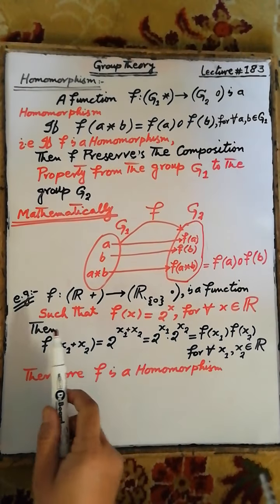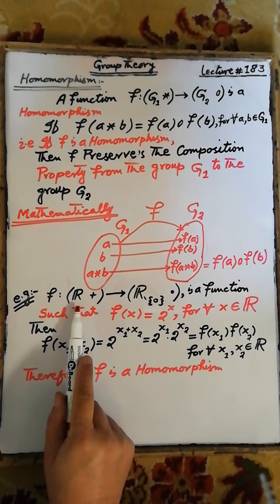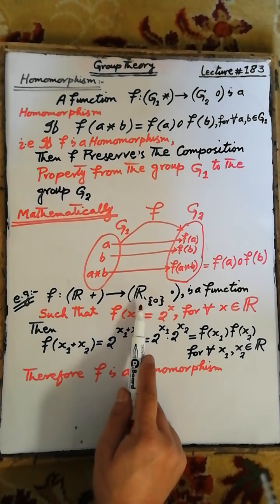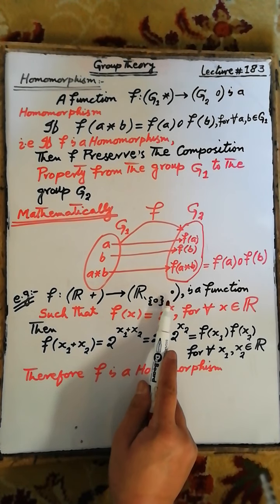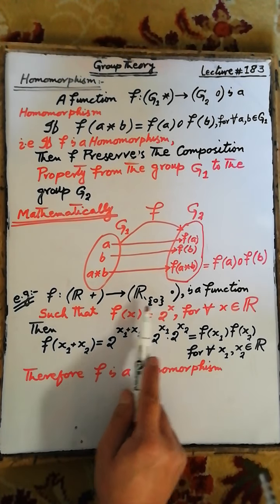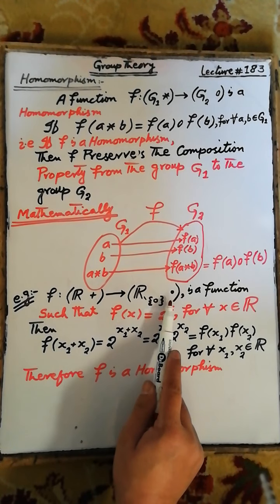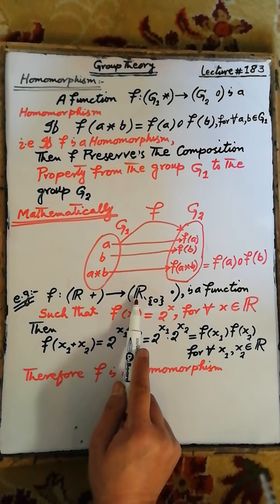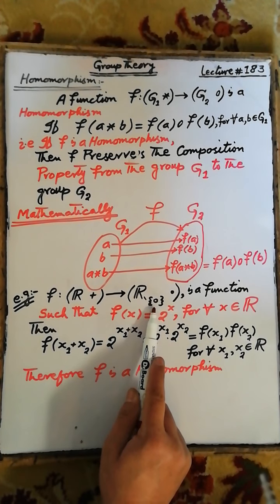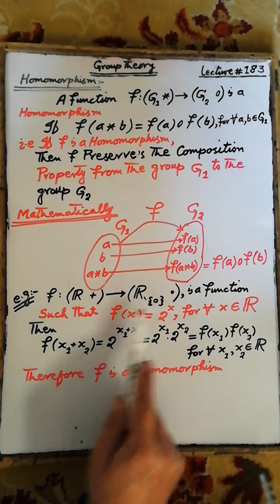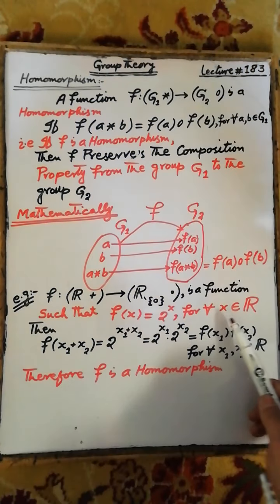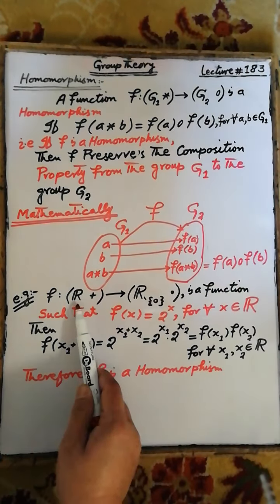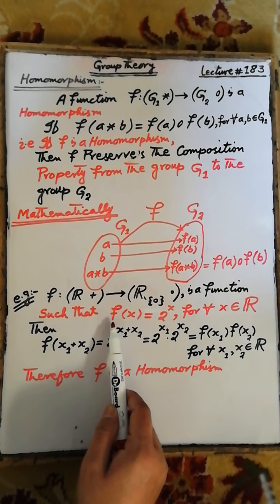For example, f is a function from the group ℝ⁺ to the group ℝ minus {0}, with respect to the binary operation multiplication — that is, the set of real numbers except 0 is a group under multiplication — such that f(x) = 2^x for each x belonging to the set of real numbers. We have to show that this function is a homomorphism.